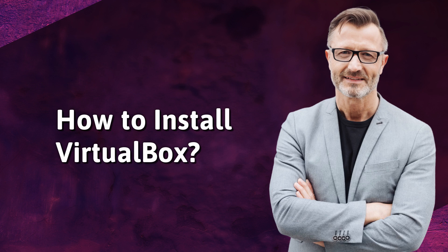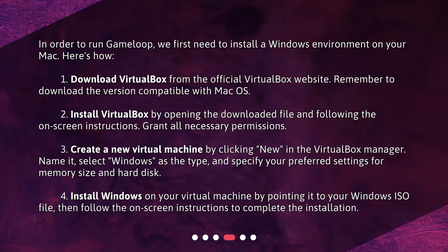How to install VirtualBox? In order to run GameLoop, we first need to install a Windows environment on your Mac. Here's how. Step 1: Download VirtualBox from the official VirtualBox website. Remember to download the version compatible with Mac OS. Step 2: Install VirtualBox by opening the downloaded file and following the on-screen instructions. Grant all necessary permissions.